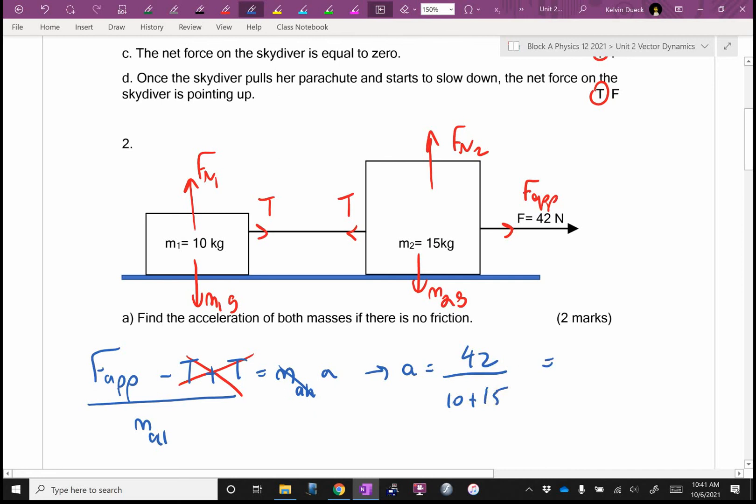So I'm going to get A equals 42 divided by 10 plus 15. So it's going to be 42 divided by 25. Can I do that in my head? I could divide by 100 and then times by 4. 16.8? No, that's not right. 1.68. Yeah.